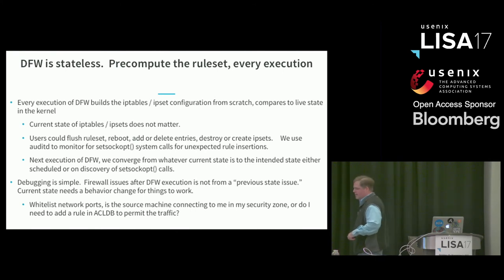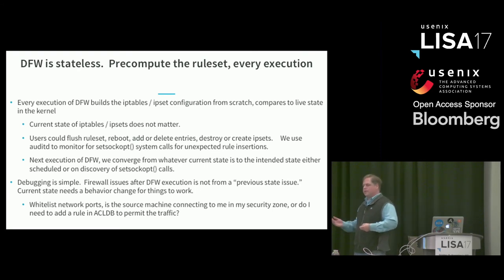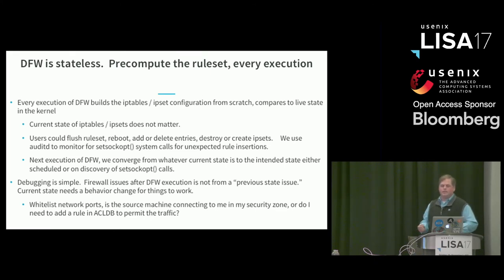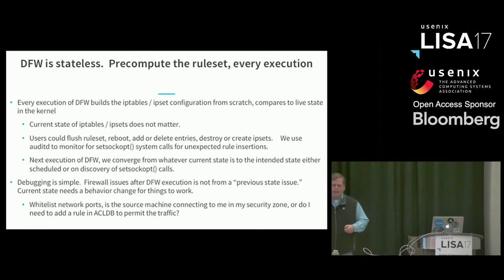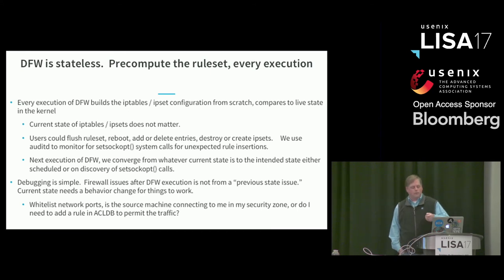Here's what's cool about IP sets: say I have a MySQL database with 10 upstream consumers, and LinkedIn deploys 100 new upstream consumers. MySQL now needs to accept 100 machines instead of 10. When this happens in distributed firewall, we build a new IP set, then the IP set swap command takes the new IP set and the one in memory and swaps them atomically — instantaneously. You could log into a machine, get root, flush IP tables and IP sets, and the next execution of distributed firewall blows away whatever you did and rebuilds to known good state. Debugging is simple: run distributed firewall, find out if traffic is being dropped, then realize you need to whitelist something.